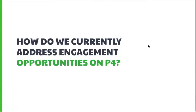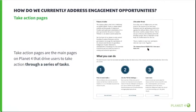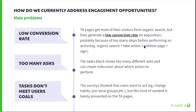Let's see how we currently address engagement opportunities on P4. Take action pages are the main pages on Planet 4 that drive users to take action through a series of tasks, but the main problems are that these pages have a low conversion rate. They get most visitors from organic search but generate a low conversion rate on acquisition, probably because of too many steps before performing an action. Sometimes we also present too many asks on these pages, which can create indecision about which primary action to perform.